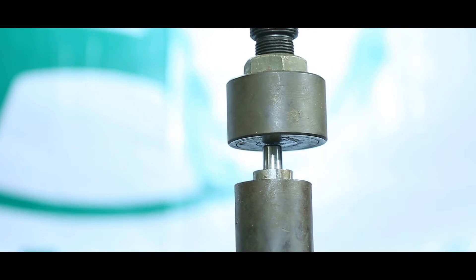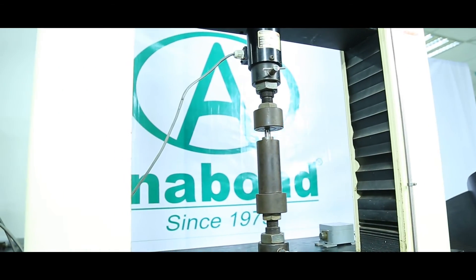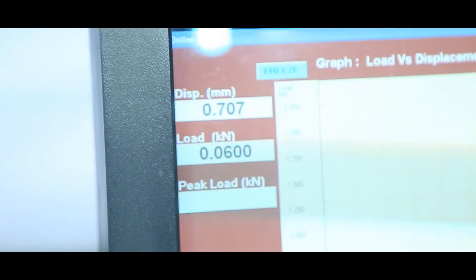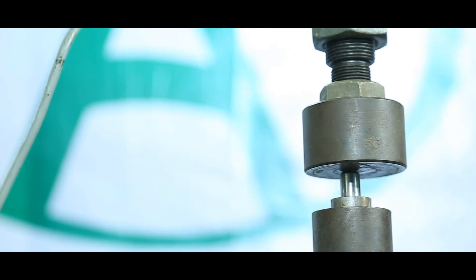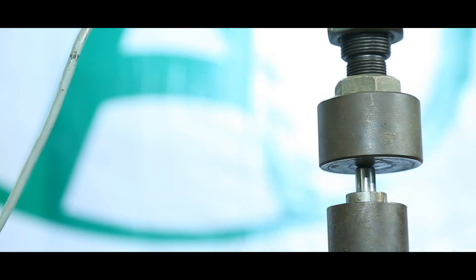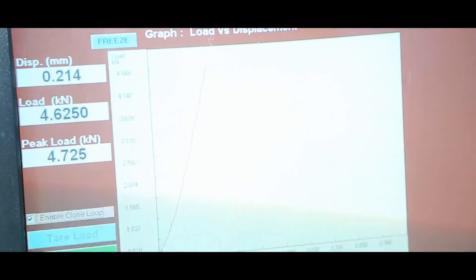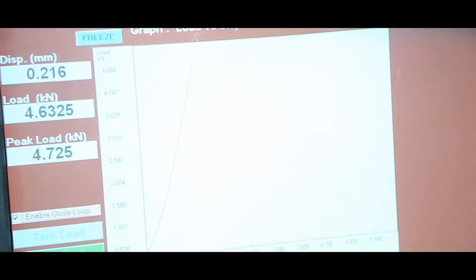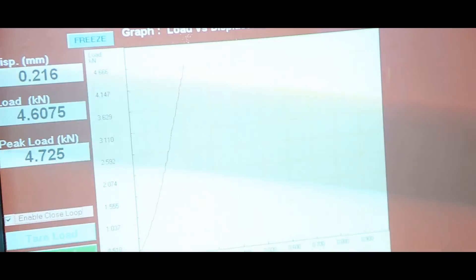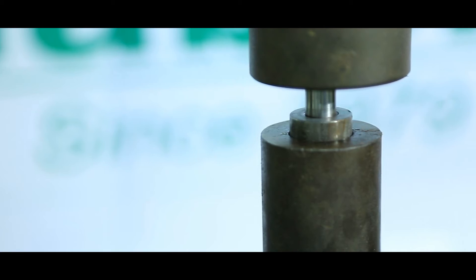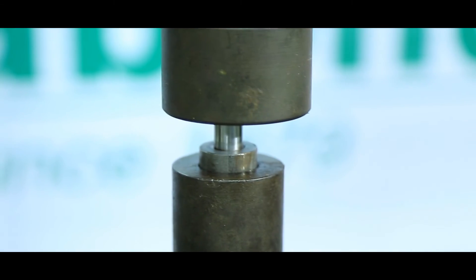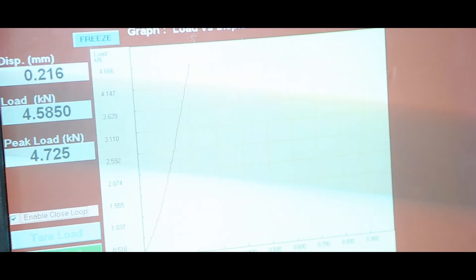We have placed the pin and bush onto the UTM. We will push the pin out of the bush using the universal test machine. We will calculate the load required to remove the pin, and with the simple calculation of force divided by the area of contact of the pin and bush, we will calculate the bonding strength in kilograms per square centimeter.